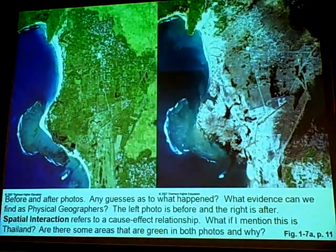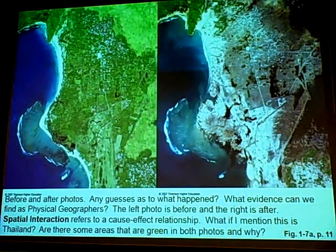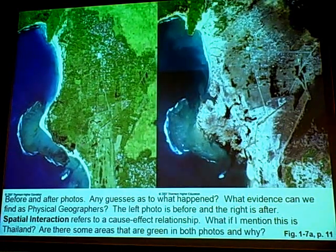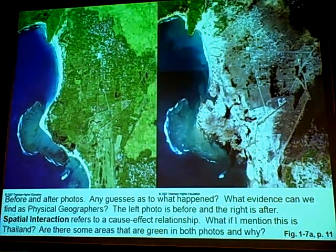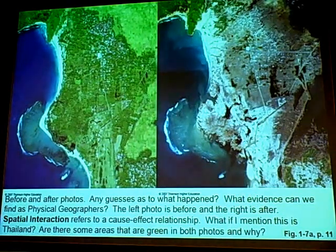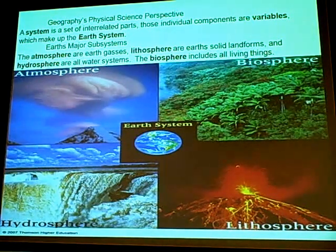These before and after pictures are really interesting. What happened here? This was a tsunami that hit. When you're looking at the before and after, you see that in one of the after photos, there are some areas that look just like they did before. As a geographer, these are the types of questions you'd want to answer — is there something, some precaution, that was made in that area to make it weather the torrential storm better? No — it's just higher elevation.